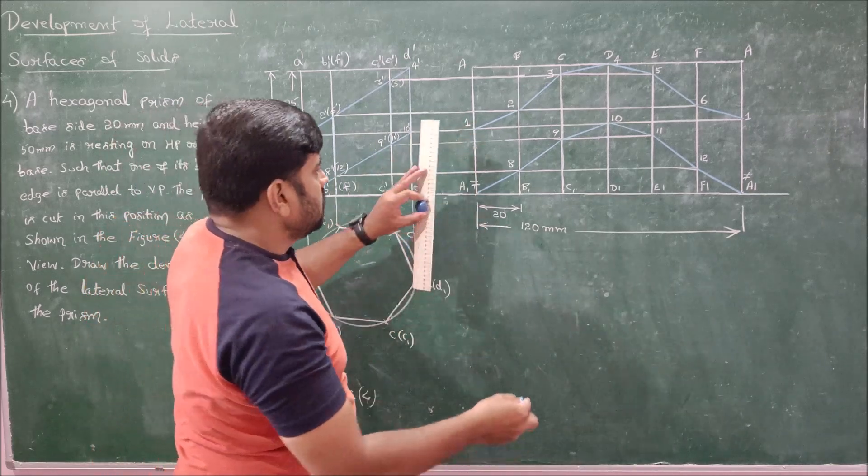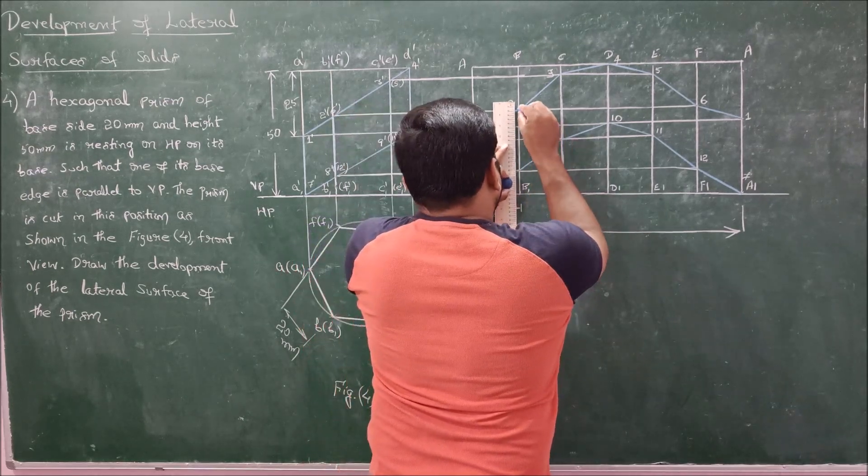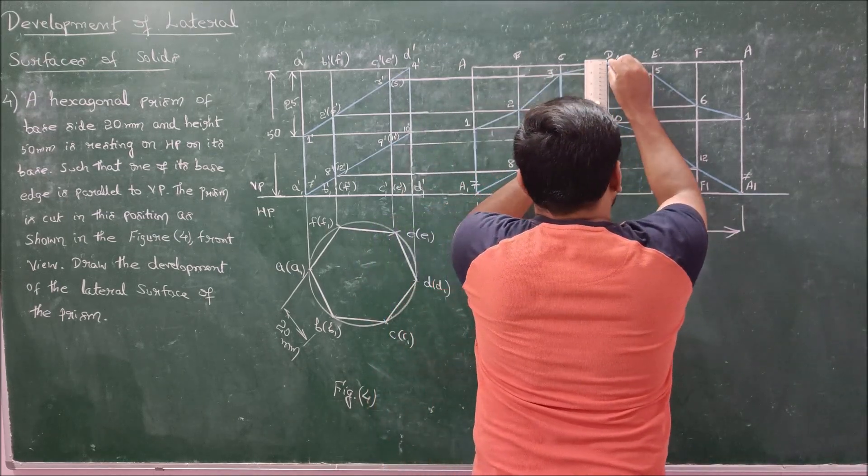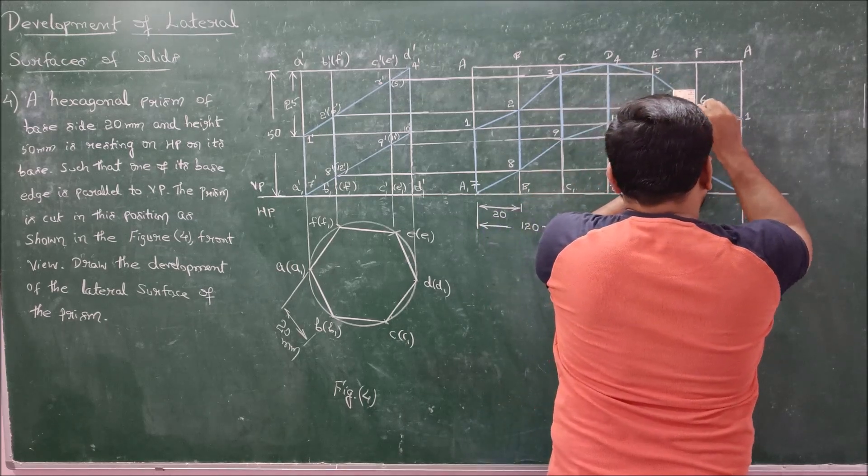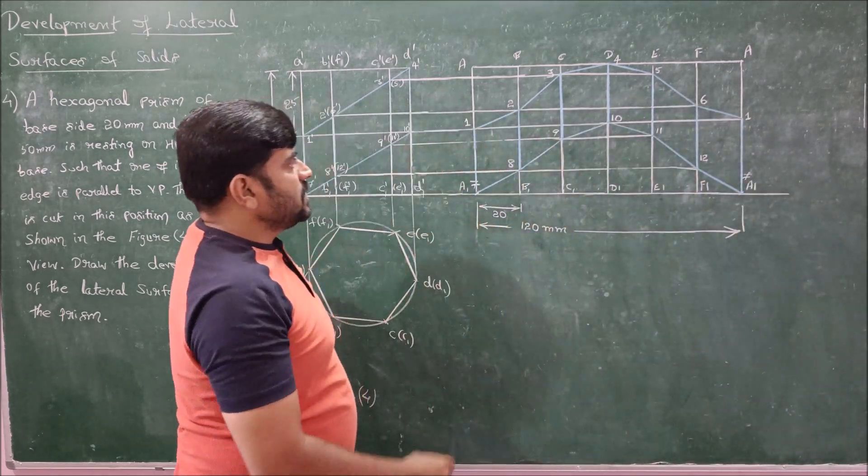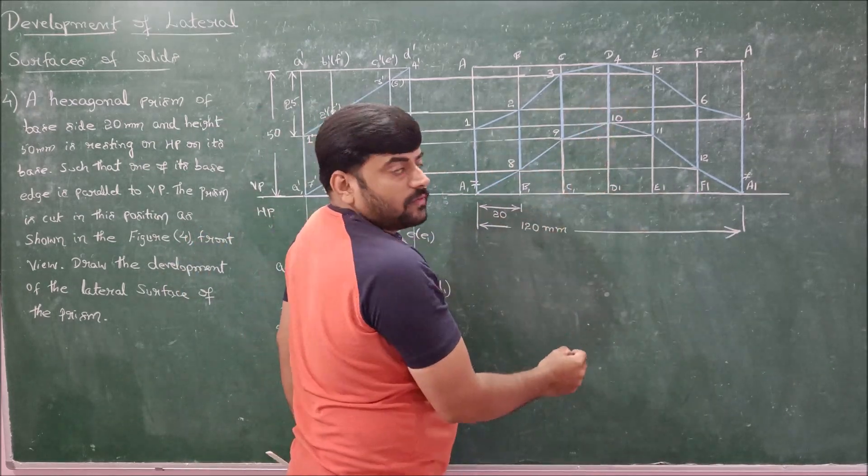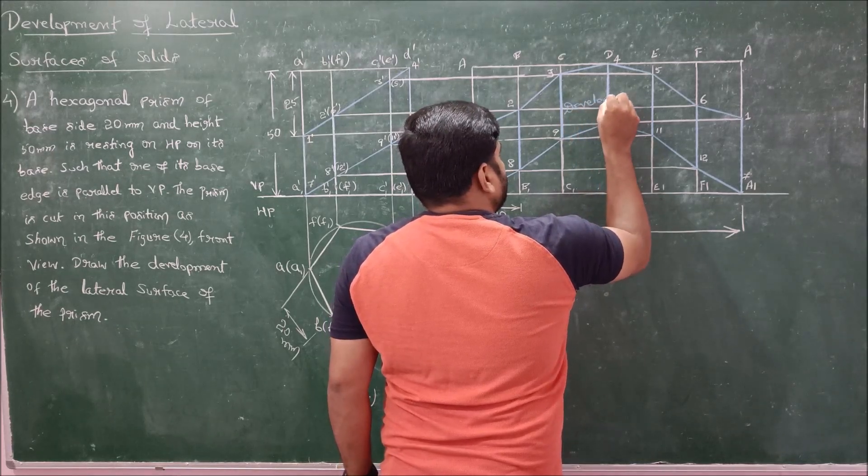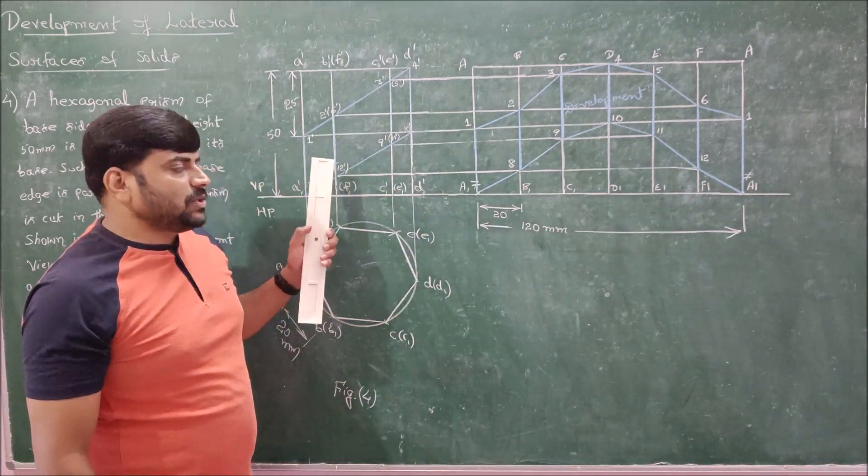Now connect these two to complete the problem. So connecting these two, I am going to get a development like this. So the portion which we have drawn in the blue chalk will be retained and this one, the white chalk will be removed off. So this is the development of given hexagonal prism cut down as shown in the front view.